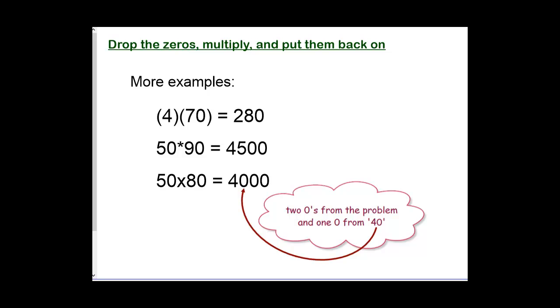Here's some more examples. 4 times 70 has one zero, so we get 280. 50 times 90 is 45 with two zeros, 4,500.